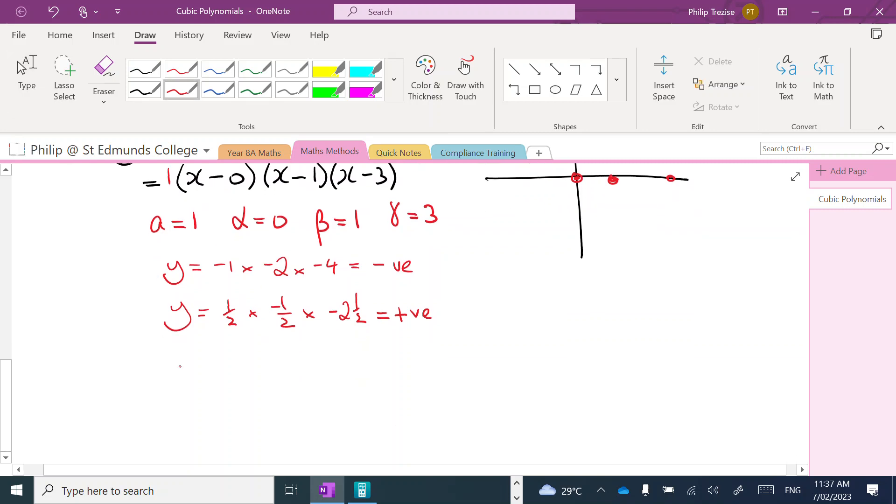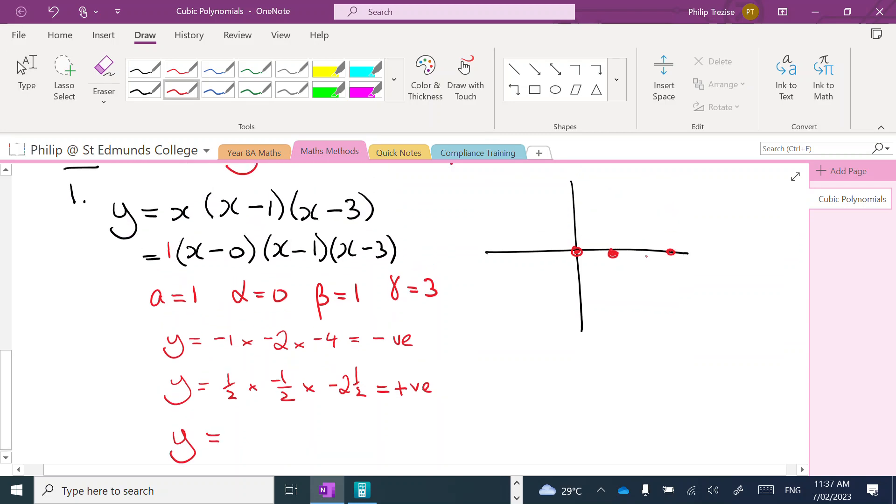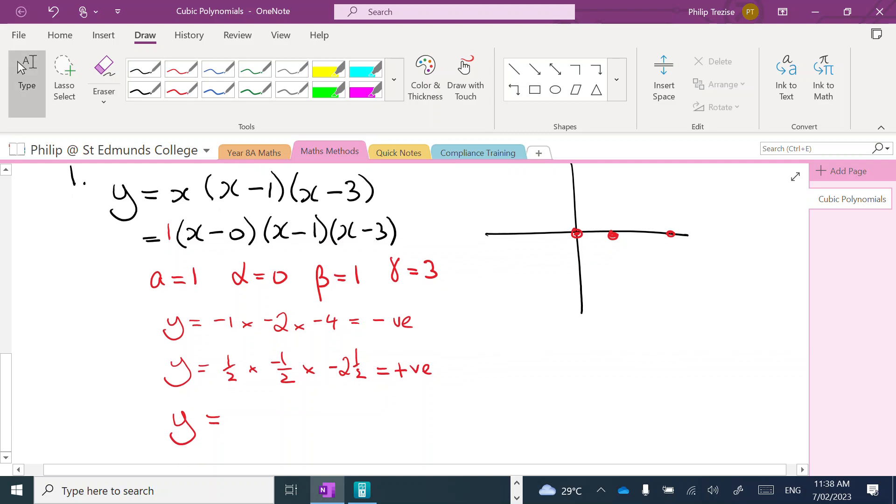I should continue checking, but I think we're going to get the idea. If I pick a nice easy value between these two roots, say the value of x = 2, I would substitute and I'd have 2, now 2 - 1 is multiplied by 1, and 2 - 3 is -1. Again, that's going to be a negative result.